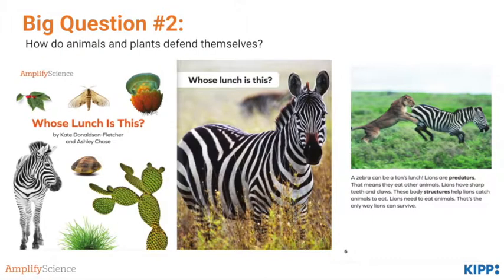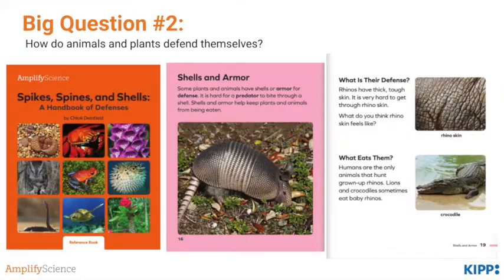They read the book Whose Lunch Is This?, which shows a picture of a plant or animal and asks the question: whose lunch is this? Who eats zebra for lunch? Lions do. They then think about the flip side of that — how do animals and plants defend themselves against predators — by reading the book Spikes, Spines, and Shells, which is the reference book for the unit.